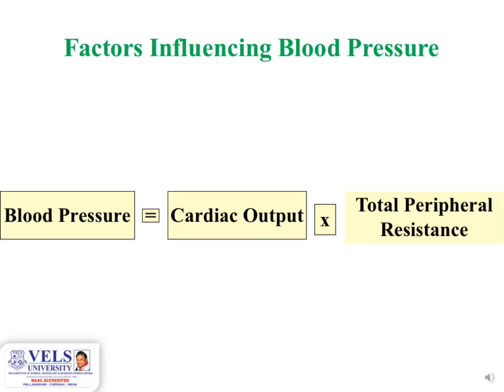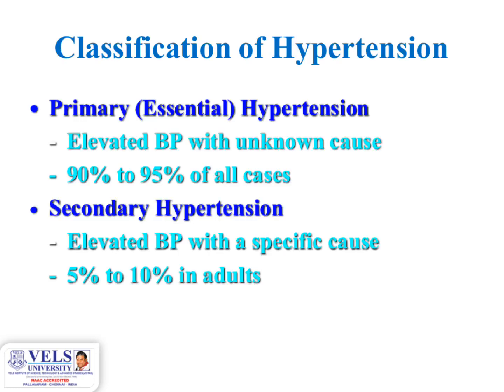Factors influencing blood pressure: blood pressure equals cardiac output multiplied by total peripheral resistance. Cardiac output is the amount of blood pumped from the heart. Total peripheral resistance refers to the resistance of the systemic circulation.